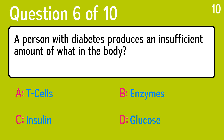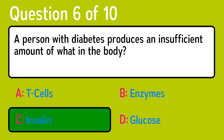Question 6: a person with diabetes produces an insufficient amount of what in the body? The correct answer is C, insulin.